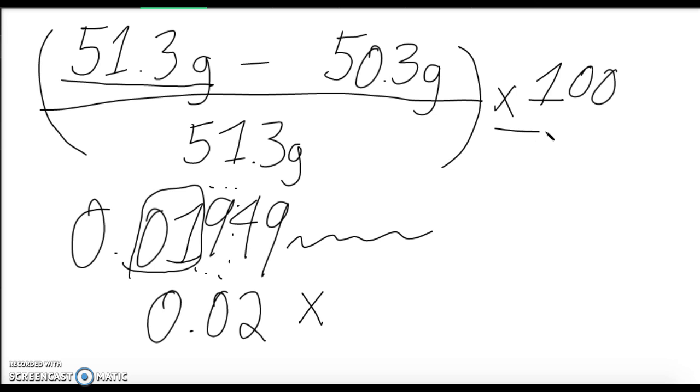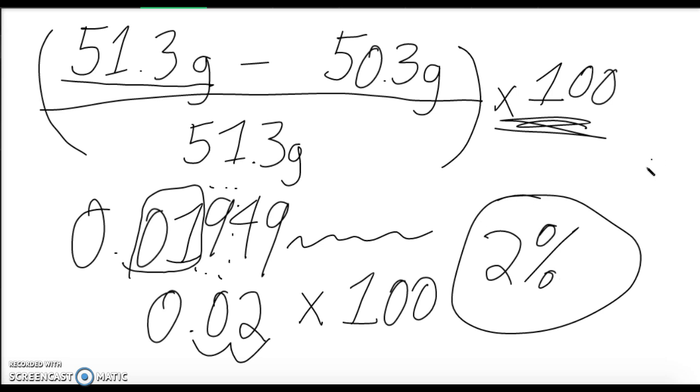But we can't forget about this guy, times 100. So 0.02 times 100, move your decimal point. Our percent error, 2%. Pretty good.